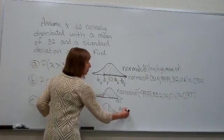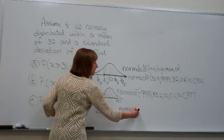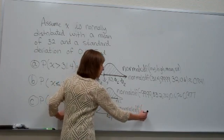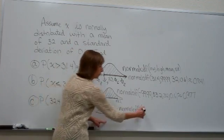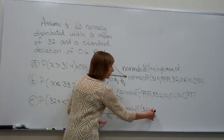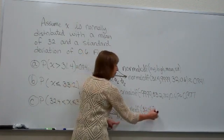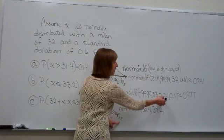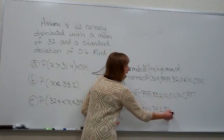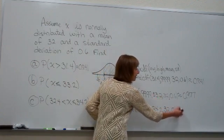Let's check it out. We have normal CDF of my low number on this span is 32.4, comma, high number is 34.2, comma, the mean is 32, and the standard deviation is 0.6.